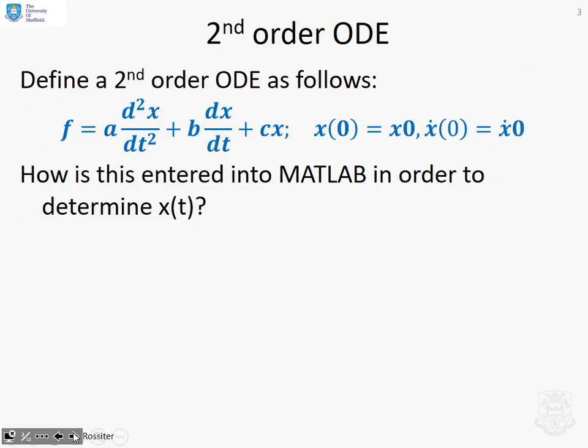An example then. Here's a second-order ODE. You can see it written here as f equals a d²x/dt² plus b dx/dt plus cx, and we've given a couple of initial conditions. So the question is, how do you enter this into MATLAB and solve for x(t)?